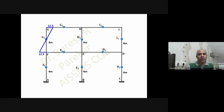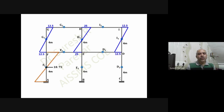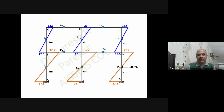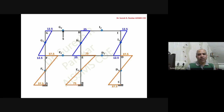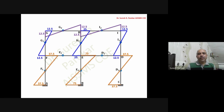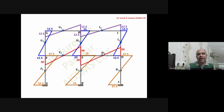For the bending moment diagram of the second problem: columns — 6.25 into 2 equals 12.5, 12.5 into 2 equals 25, and again 12.5; 18.75 into 2 equals 37.5, 37.5 into 2 equals 75, and again 37.5. For beams: 5 into 2.5 equals 12.5, 4.17 into 3 equals 12.5, 20 into 2.5 equals 50, and 16.67 into 3 equals 50.